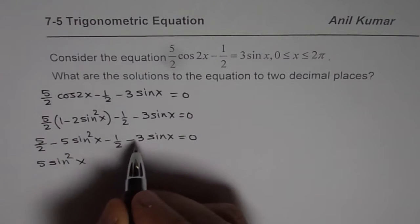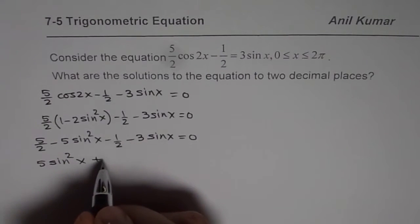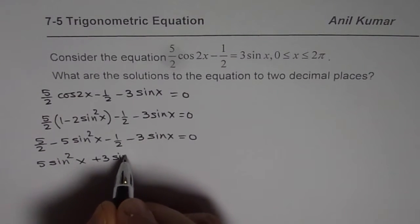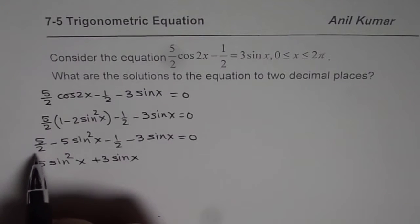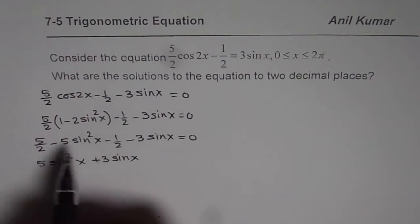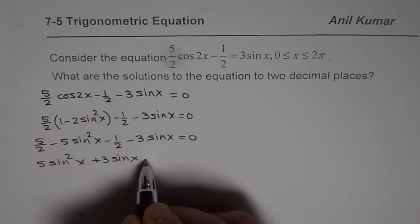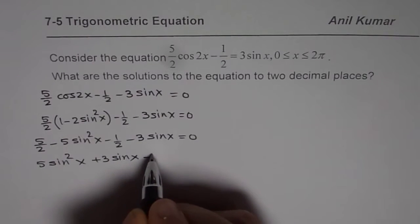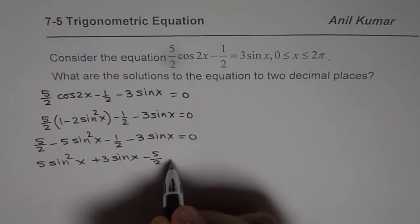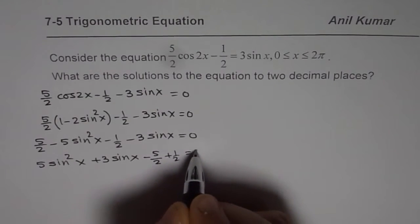So we get 5sin²(x), multiplying by negative number, and this becomes +3sin(x). If this becomes negative, that becomes positive. So we get plus 1/2. We multiplied by negative each term and rearranged, writing the square terms first.